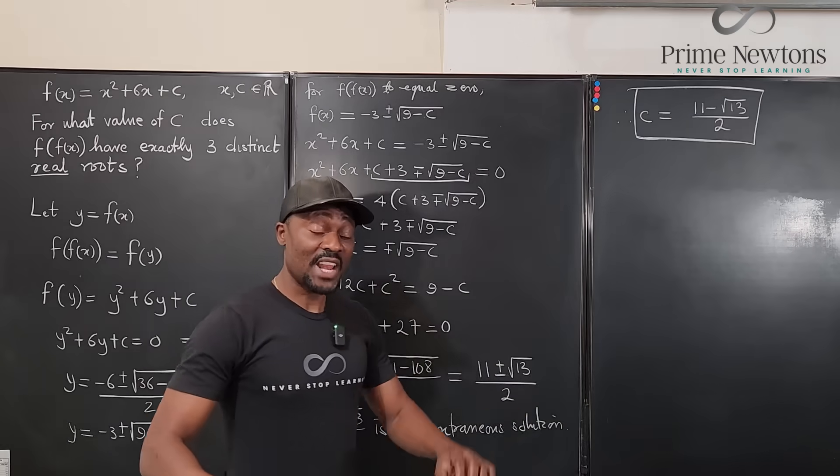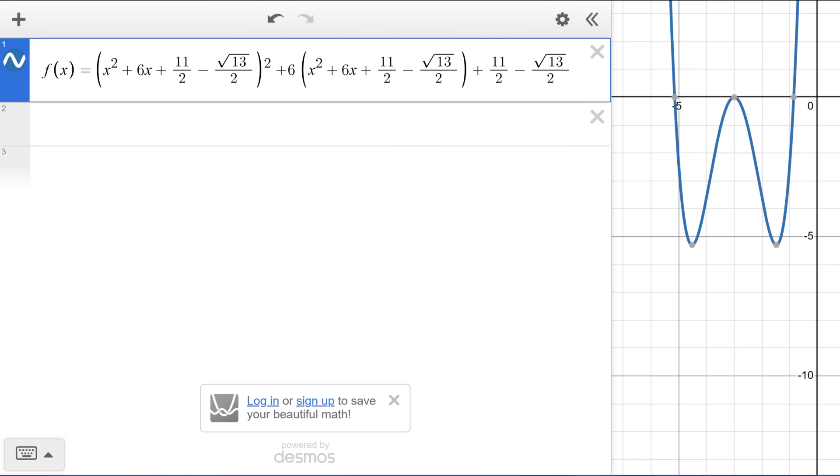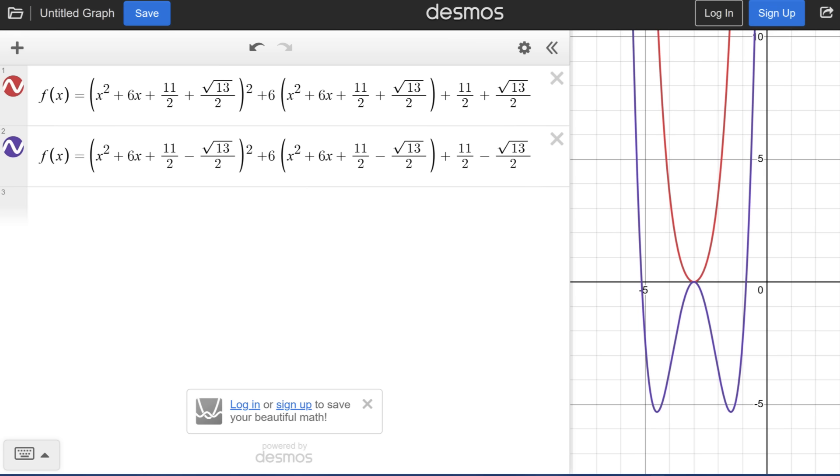And I decided to go on Desmos and graphed it. And this was what I got. So the negative version gave me the right answer, the right graph. The positive version did not give me what I was looking for. I was looking for three real roots. It only gave me one double root. So that wasn't my answer.